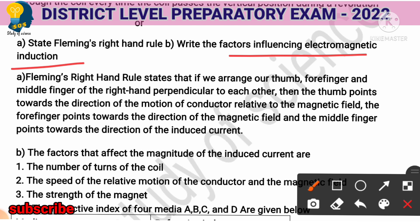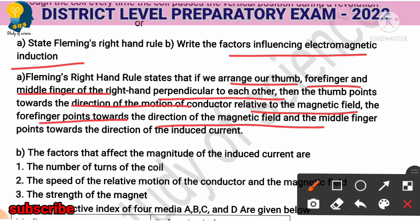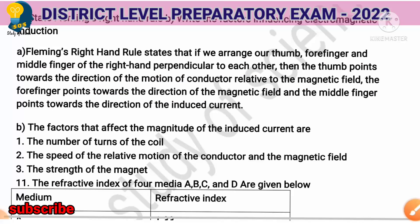Alternatively, you can write Fleming's right hand rule: if we arrange our thumb, forefinger, and middle finger of the right hand perpendicular to each other, the thumb points towards the direction of motion of the conductor relative to the magnetic field, the forefinger points towards the direction of the magnetic field, and the middle finger points towards the direction of induced current. Writing either left hand rule or right hand rule will earn you 1 mark.